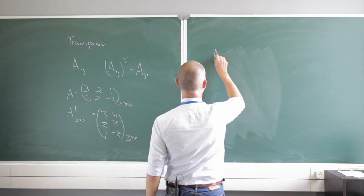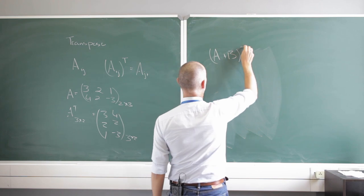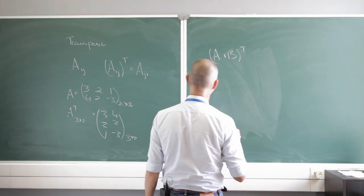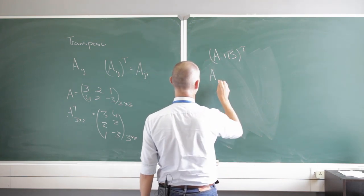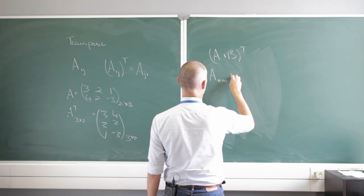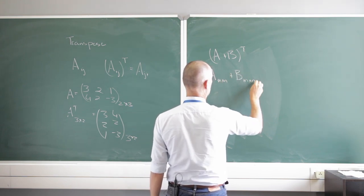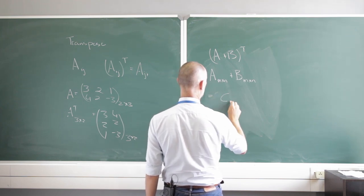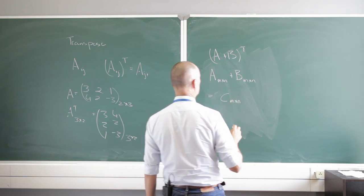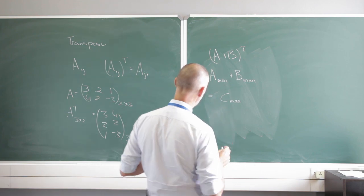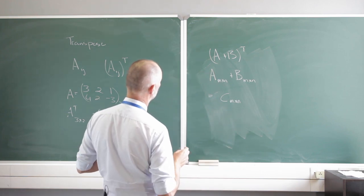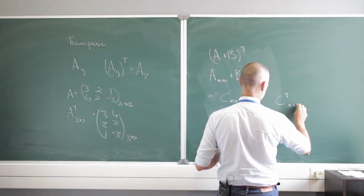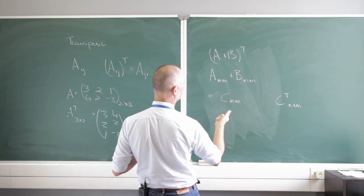What happens if I have (A + B) and take its transpose? Remember, to add two matrices they must have the same size. So let's make A an M×N matrix and B also M×N. The result C will also be M×N. Now what happens if I take the transpose of C? C transpose is going to be an N×M matrix — the rows and columns are swapped.